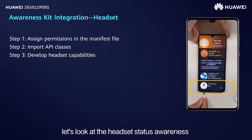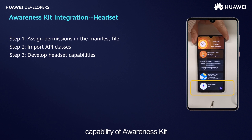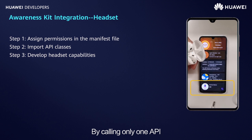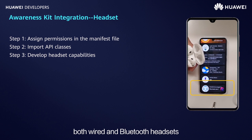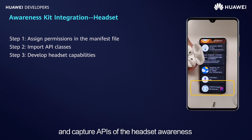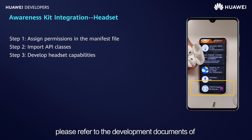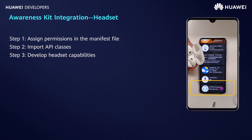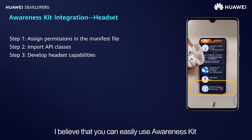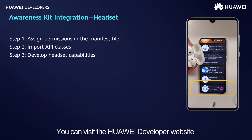Finally, let's look at the headset status awareness capability of Awareness Kit. By calling only one API, you can detect the connection status of both wired and Bluetooth headsets, which is more convenient and simpler than the native Android API. The method of calling the barrier and Capture APIs for the headset awareness capability is similar to that of the preceding capabilities. For details, please refer to the development documents of Awareness Kit on Huawei Developer. I believe that you can easily use Awareness Kit after completing this course. You can also visit the Huawei Developer website to view other capabilities not introduced in this course.